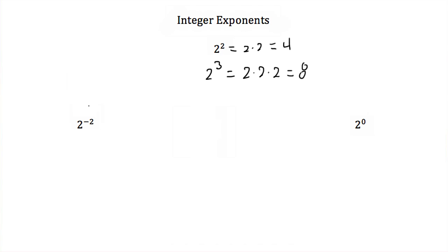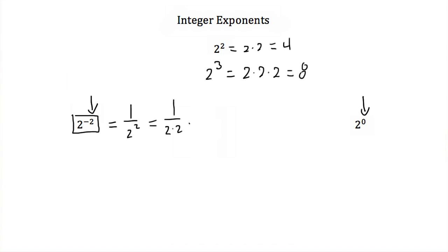But what if we have a negative number in a power, or a zero in a power? Whenever we have a negative exponent, that just means this term is in the denominator. So 2 to the negative 2 is the same as 1 over 2 squared, and that's equal to 1 over 2 times 2, or 1 fourth. So 2 to the negative 2 is just equal to 1 fourth.